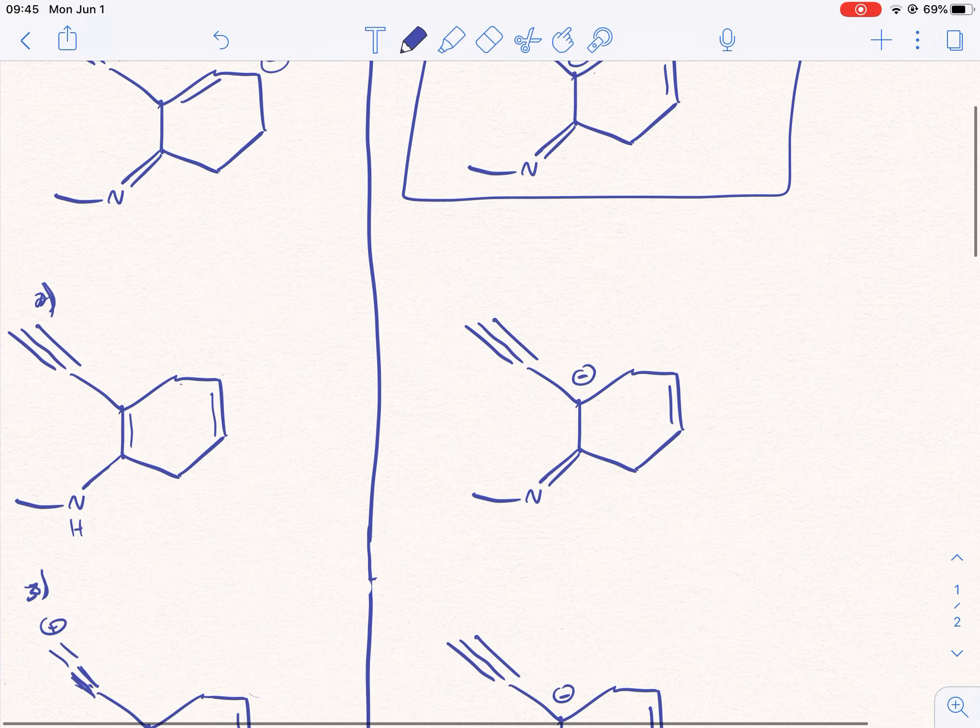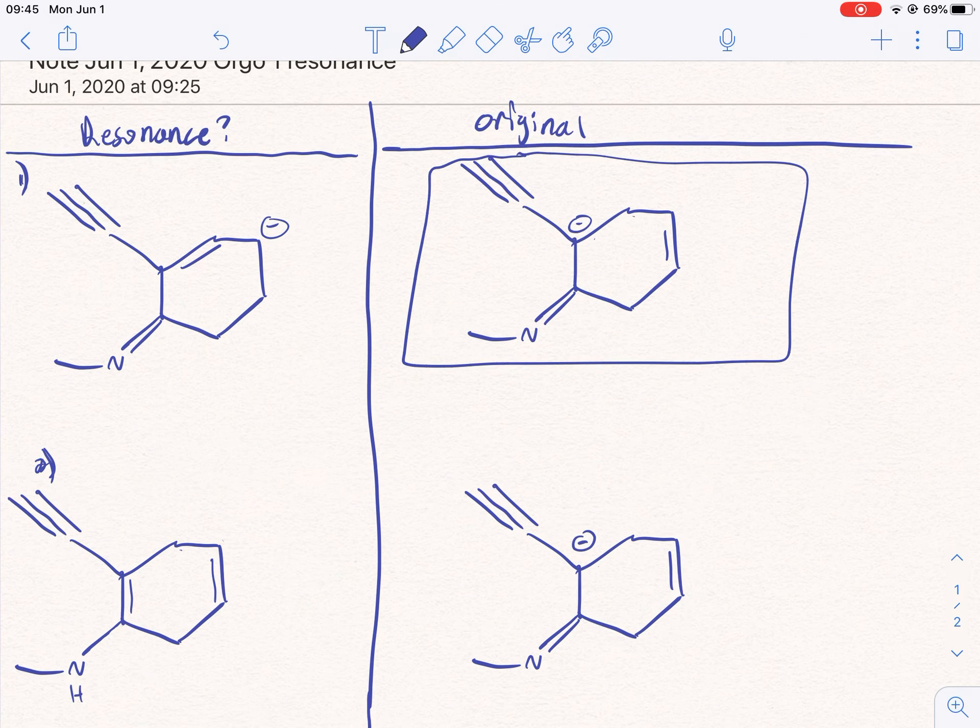So I just wrote all the originals on the right side to compare to the resonance ones, and I put a question mark because these may or may not be resonance forms. Sometimes when you're doing these questions and they give you a comparison, sometimes all of them are wrong. But you can usually identify at least two that are blatantly wrong.